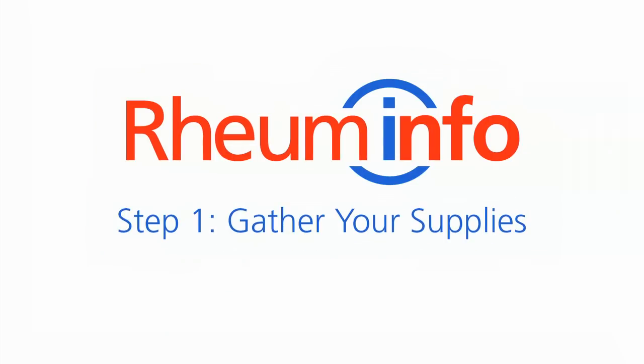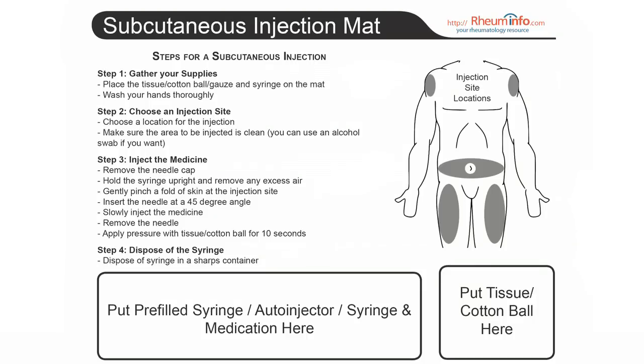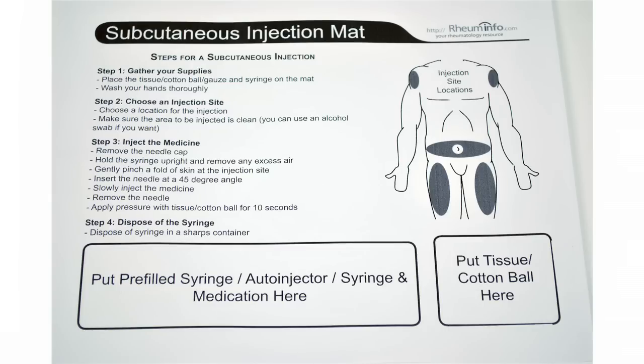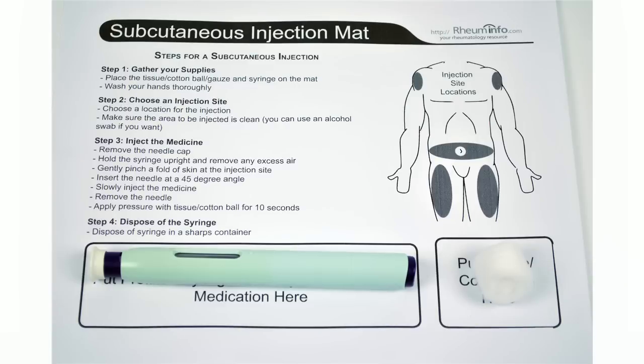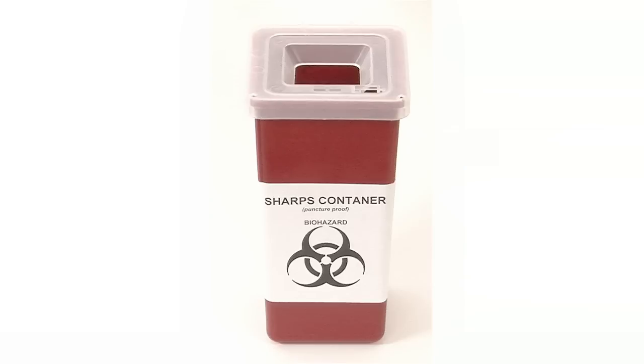Step one, gather your supplies. At roominfo.com, we've prepared a special injection placemat. This will help to make sure you've got all of the necessary supplies. Place your injection mat on a clean table or surface. You'll need your auto-injector. If it has been in the refrigerator, it's a good idea to let it warm up for about 30 minutes. If you're not sure, talk to your doctor or pharmacist. You'll also need a clean gauze or tissue, and finally, a puncture-proof sharps container to dispose of the used auto-injector. If you're missing any of the supplies, talk to your local pharmacist.